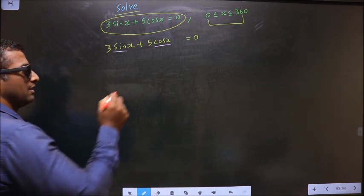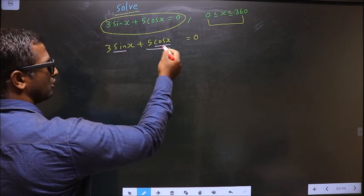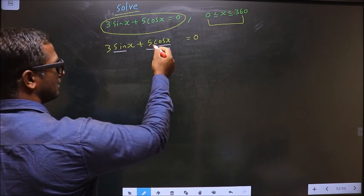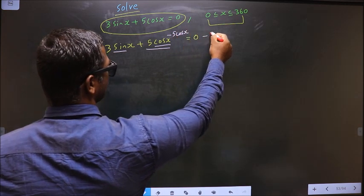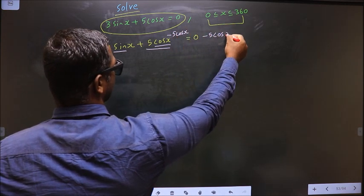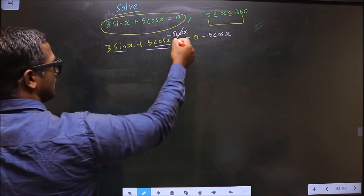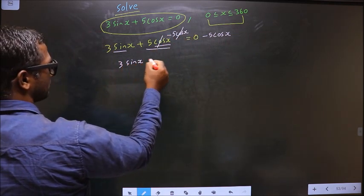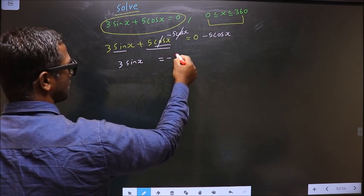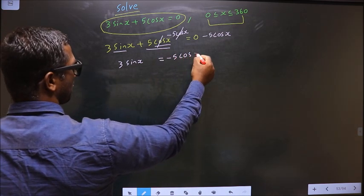Step 1. 5 cos x should not be present on this side. So to remove this, you subtract 5 cos x. So now this cancels out. You get 3 sin x equal to minus 5 cos x.